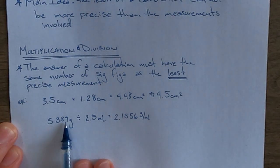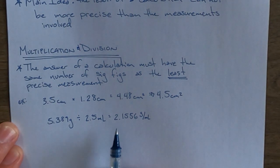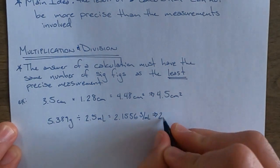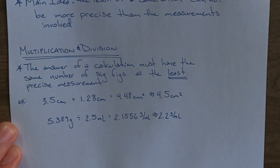Now again we look and we see what we need to round it to. This first figure in the calculation has four significant figures. This second measurement has only two significant figures, and so our answer needs to be rounded so that it only has two significant figures. We would have an answer of 2.2 grams per milliliter.